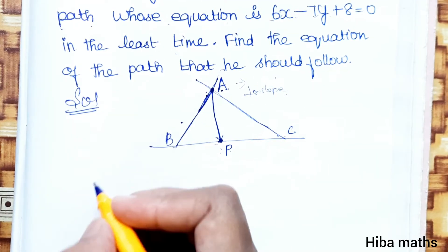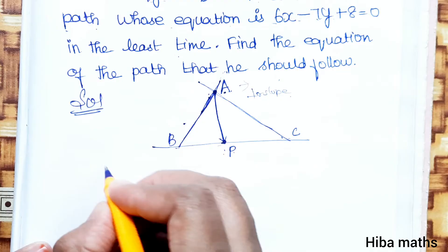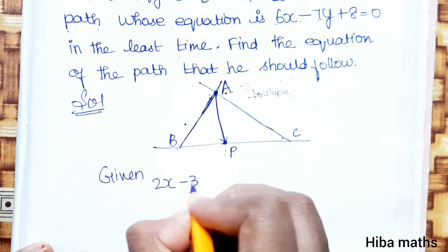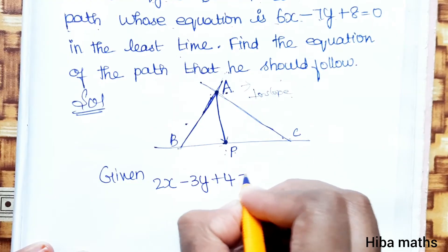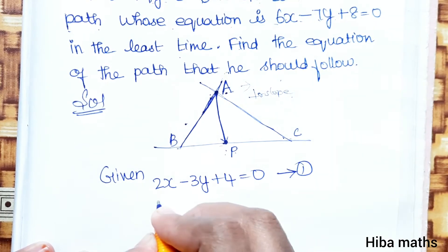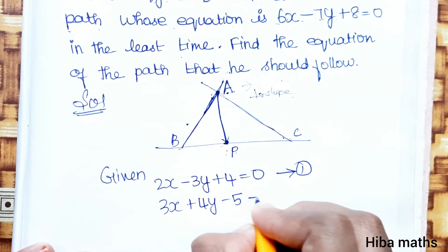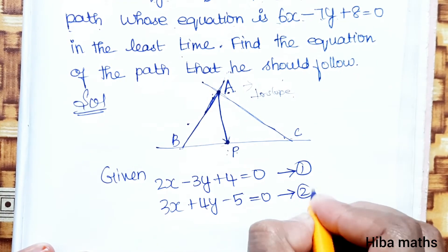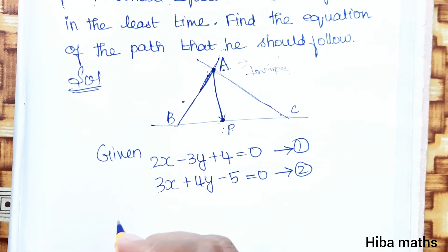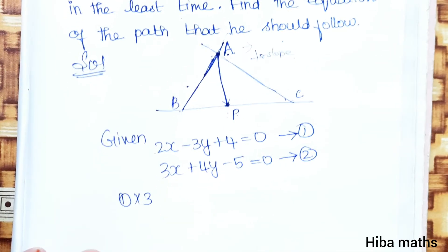Can we solve it? How do we solve it? Now we have two equations. Given: equation 1 is 2x minus 3y plus 4 equal to 0, and equation 2 is 3x plus 4y minus 5 equal to 0.